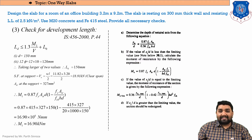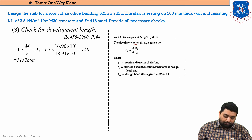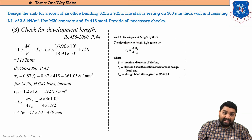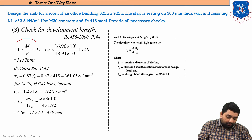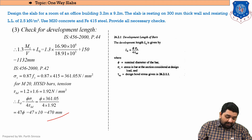For the LHS — development length Ld — the formula is Ld = φ × σs / (4 × τbd), from IS 456 page 42/44. Here φ = 10 mm, σs = 0.87fy, and τbd = 1.92. This gives Ld = 470 mm. The RHS = 1.3 × (M1/V) + L0 = 1.3 × (16.90/18.91) + 150 = 1132 mm. Since 470 ≤ 1132, the check is satisfied.